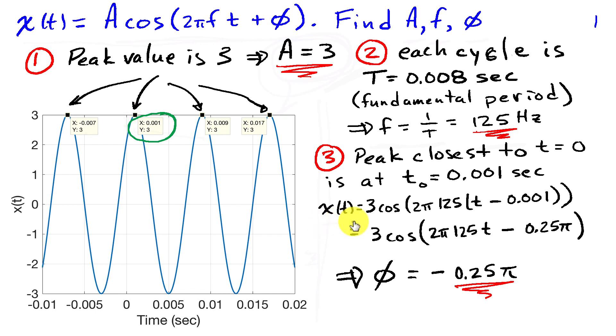Therefore, I can write the sinusoid in terms of its amplitude 3 times cosine of 2 pi, 125, the frequency, and then T minus 0.001. So this minus 0.001 is the time shift of one millisecond to the right that's evident in this sinusoid. Once we've written it this way in terms of a time shift, we can just multiply the 2 pi 125, distribute that over both terms, and we end up writing the sinusoid as 3 cosine 2 pi 125 T minus 0.025 pi. So the phase shift is negative pi over 4, or 0.025 pi.